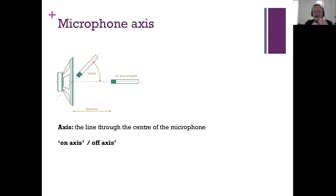We're going to plow on through this and get some of this out of the way. I mentioned before this whole idea of the microphone axis, which is the center line or imaginary line drawn through the center of the microphone — that is known as the microphone's axis. We talk about things being on-axis to the source or off-axis to the source.